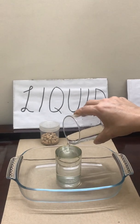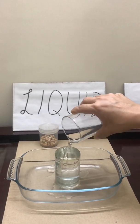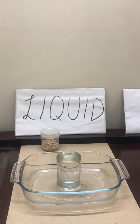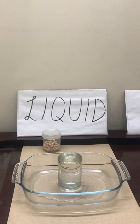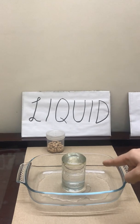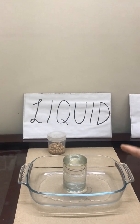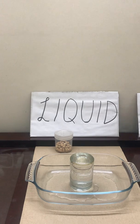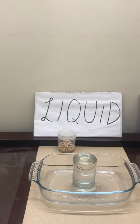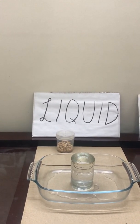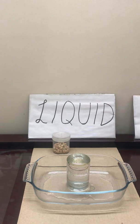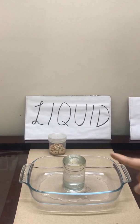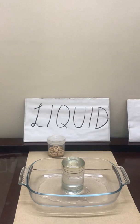We see that whatever is the excess water, it actually flows out, clearly showing that this particular glass has some capacity — we cannot add more water to it than what it can hold. So this experiment illustrates that water occupies space, it has some definite volume, and it is taking the shape of this particular glass.